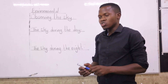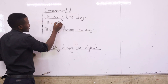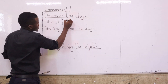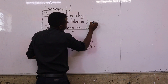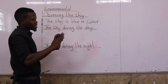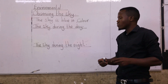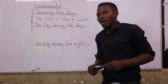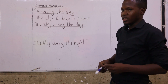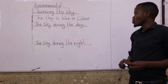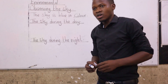Are we together? Yes. So we say the sky is blue in color. So when the sky is clear, it is blue in color. And we are going to look at those things that are found in the sky during the day, and also the ones that can be seen in the sky during the night. Are we together?